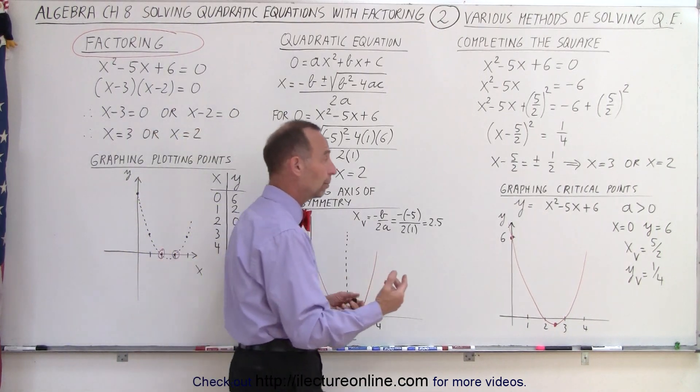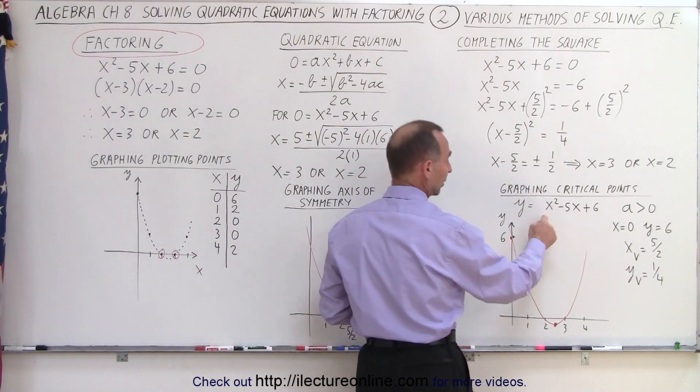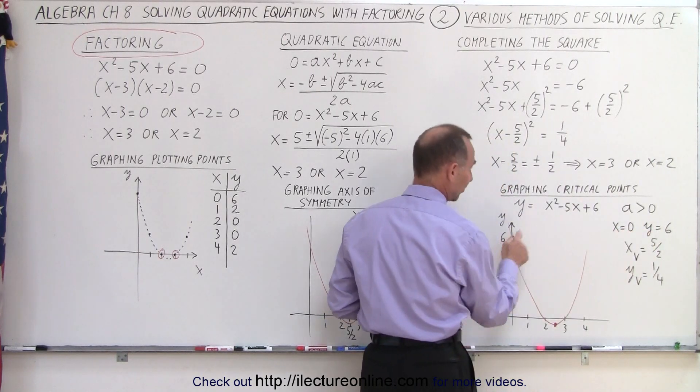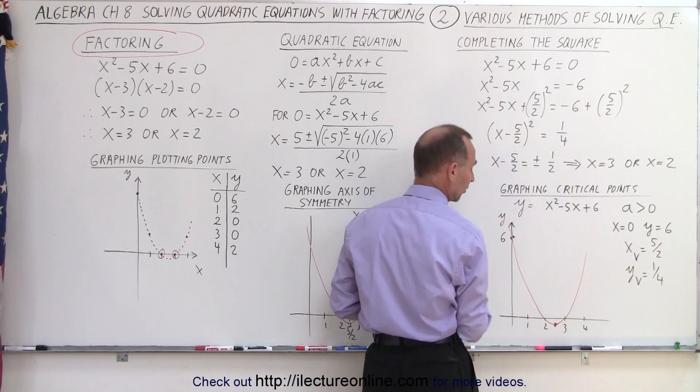Or we can find the critical points. We can set x equal to 0, for example. That means when x equals 0, y equals 6. That's easy to find - that's simply this constant here.